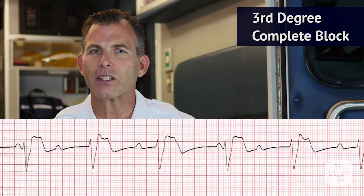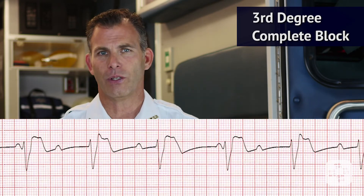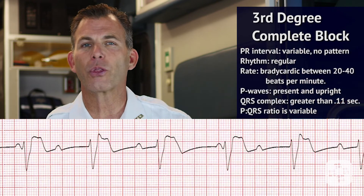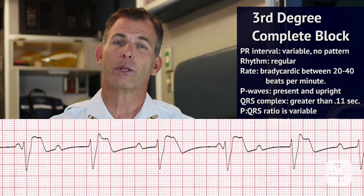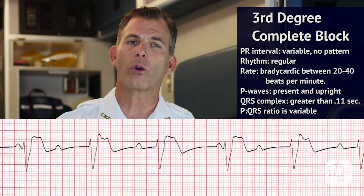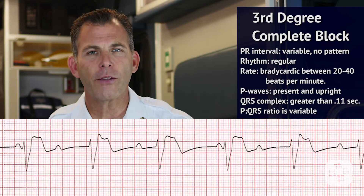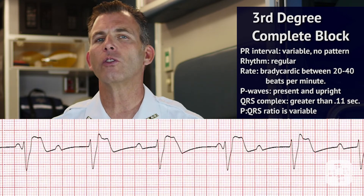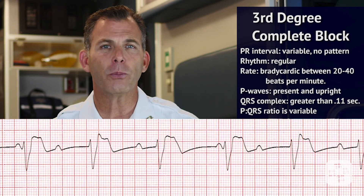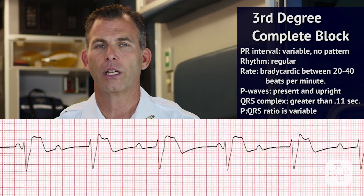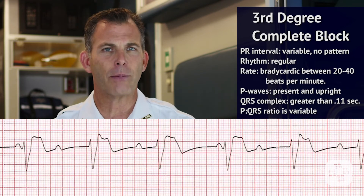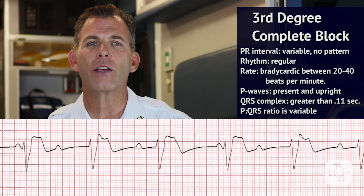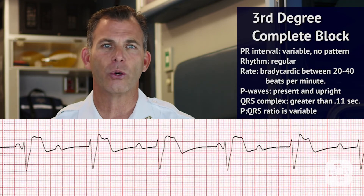In this case, the ECG is as follows. The rhythm is regular but the rate is bradycardic, between 20 to 40 beats per minute. P waves are present and upright while the P to R interval is variable with no real pattern. The QRS complex is greater than 0.11 seconds and the P wave to QRS ratio is variable.